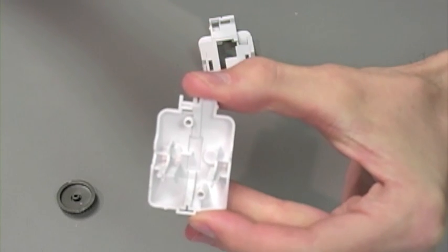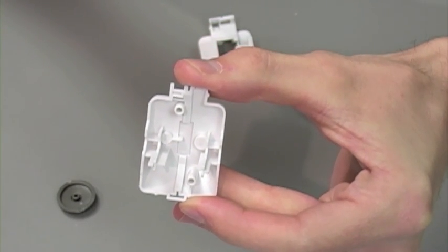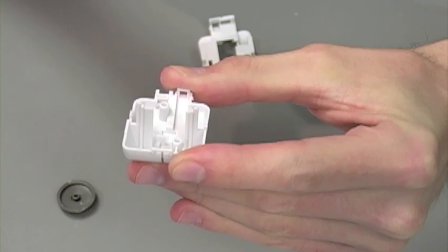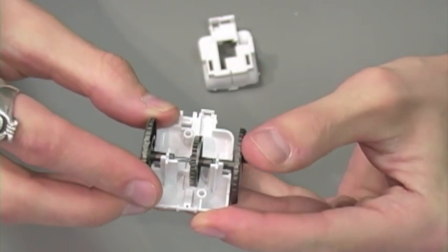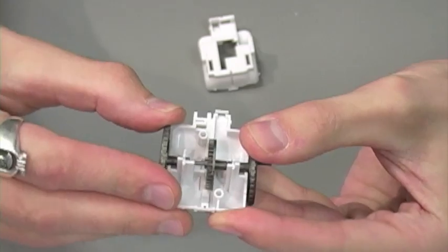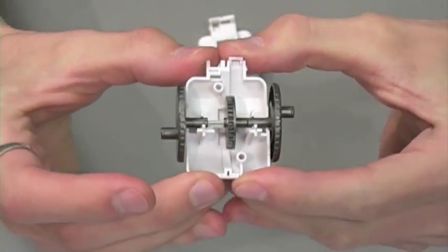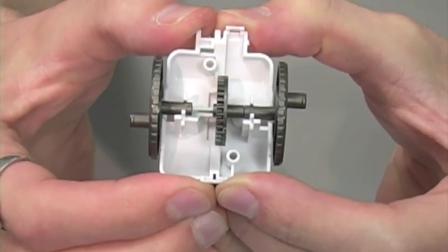For step 2 of building our lower gearbox we're going to take part A8 and we're going to place our wheels and shaft into position so that it looks like this. Step 2 complete.